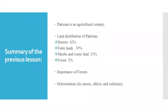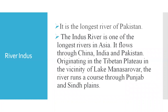Let's have a summary of the previous lesson. We learned that Pakistan is an agricultural country and its land has been divided into different areas like deserts, farmlands, scrubs and wastelands, and forest. We also learned about the importance of forest, deforestation, its causes, effects, and solutions. Now let's start today's topic — the rivers of Pakistan.